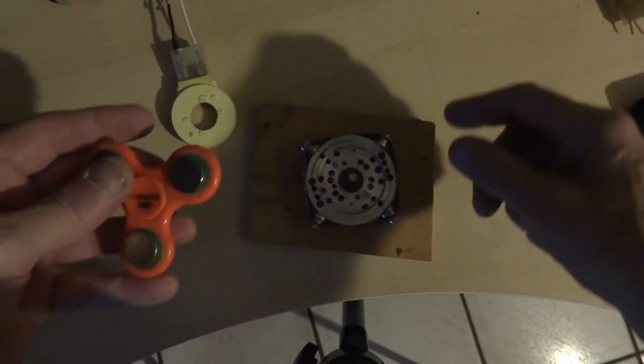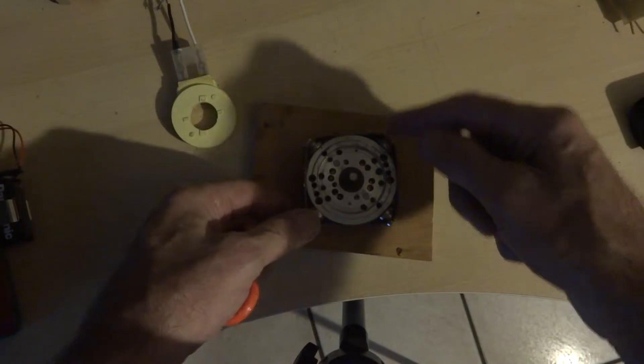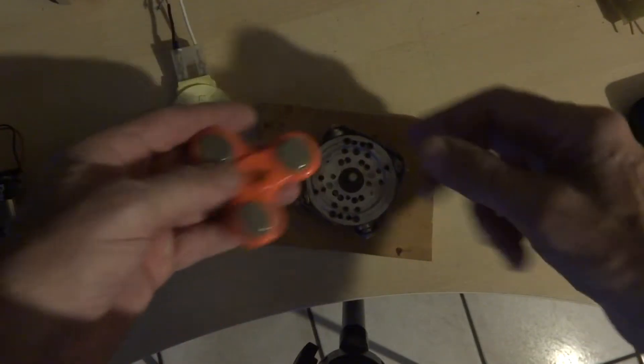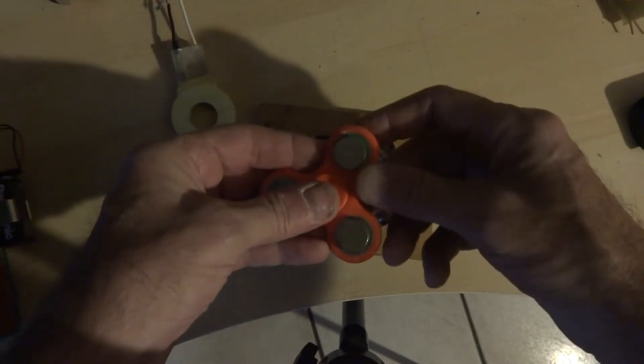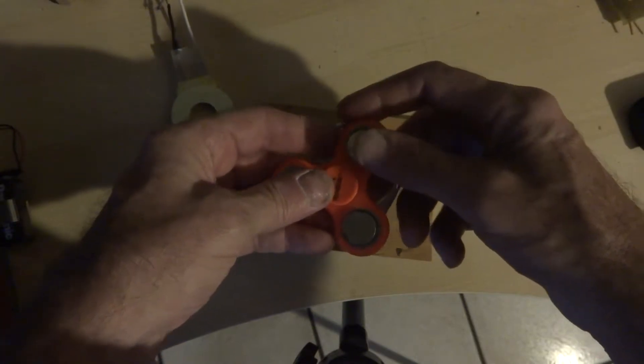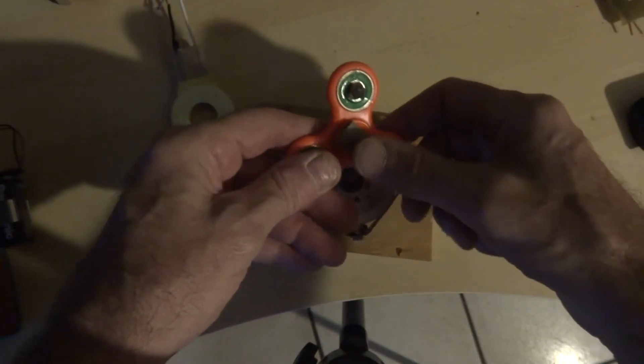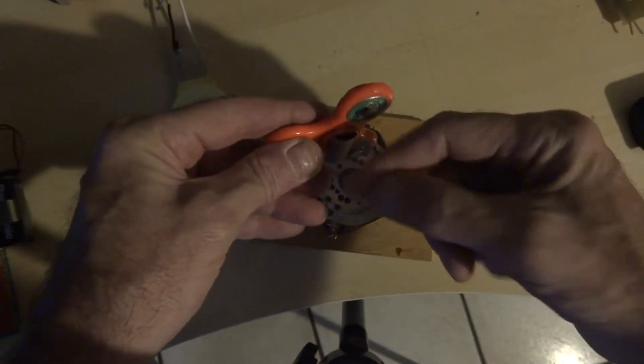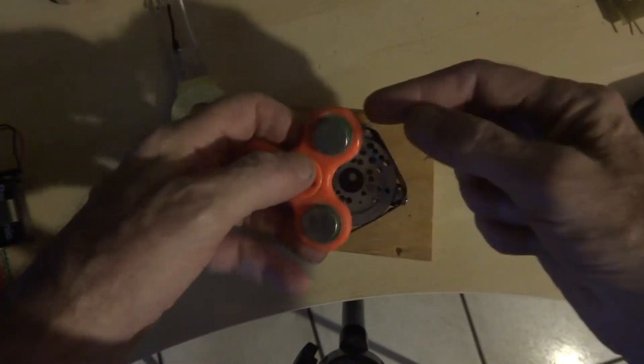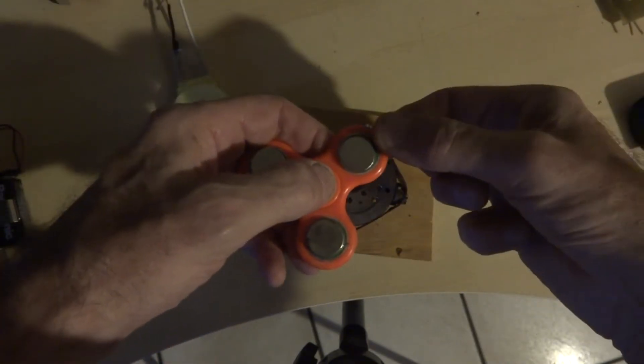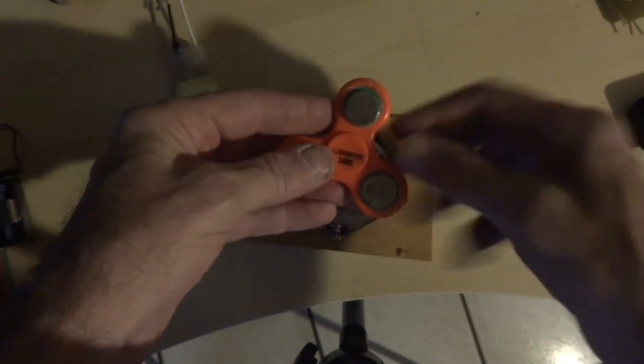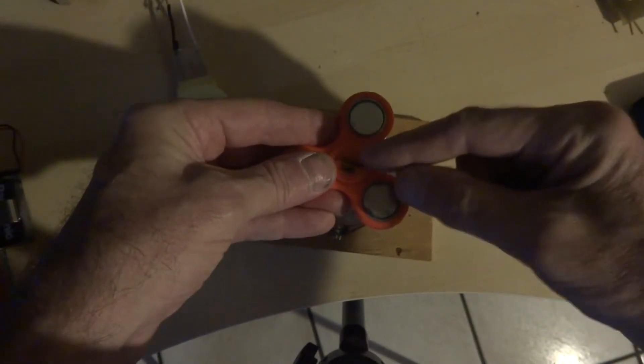So here we have basically just magnets on something that will spin. If you're going to use a fidget spinner like this one I was playing with recently, just put a piece of tape on the bottom to raise it up. Even if you have the magnets on the outside, you might not have enough clearance from this part on the bottom.